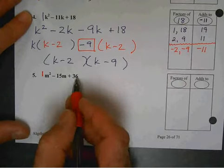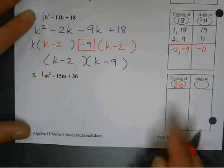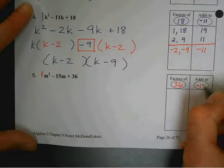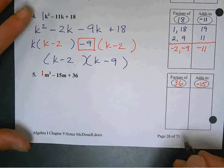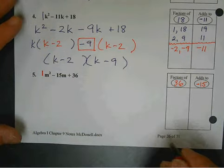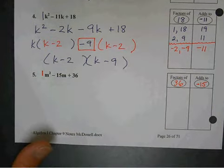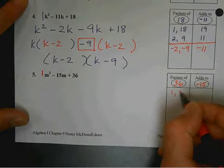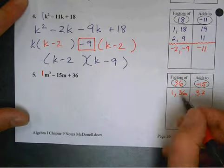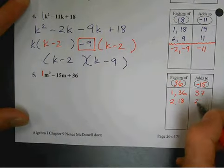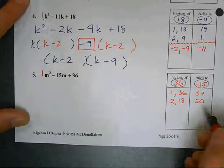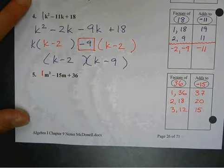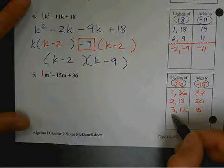1 times 36 is? 36. So, it multiplies to 36. What is it supposed to add to? Negative 15. Negative 15. Noah, do you need something to write with? Do you have your notes? Do you have a pencil? Okay. Why don't you take notes with us? All right. 1 and 36, obviously, is 37. Doesn't work. 2 and 18 is 20. Doesn't work. 3 and 12 is 15. Is that close? Yeah. Okay. Draw a line.